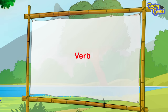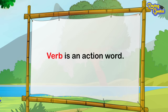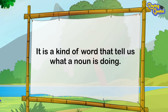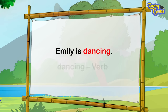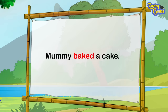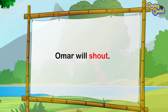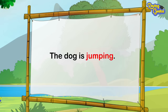Verb. In simple language, verb is an action word. It is a kind of word that tells us what a noun is doing. Almost every sentence has a verb and usually it comes after a noun or pronoun. For example, Emily is dancing — the word dancing is a verb as it tells us what the noun Emily is doing. Mummy baked a cake — baked is a verb. Omar will shout — shout is a verb. The dog is jumping — jumping is a verb. The horse trotted — trotted is a verb.